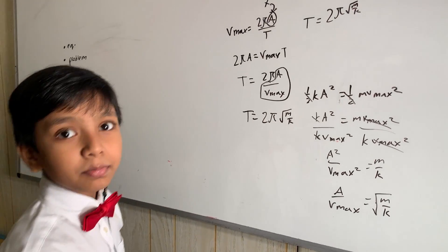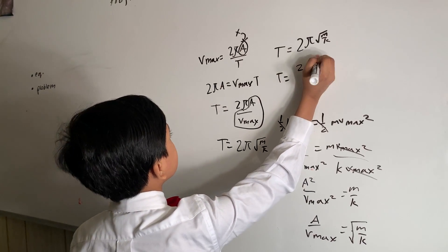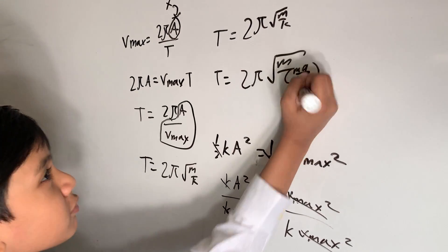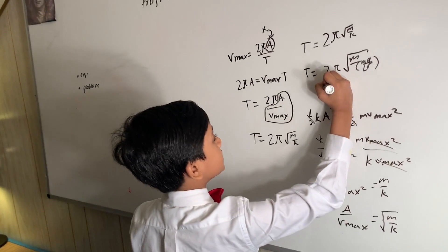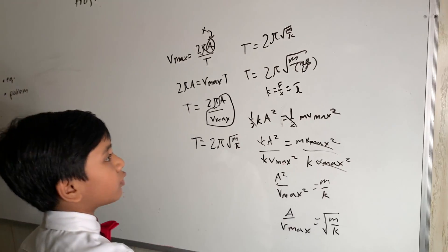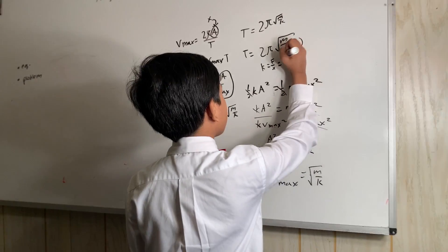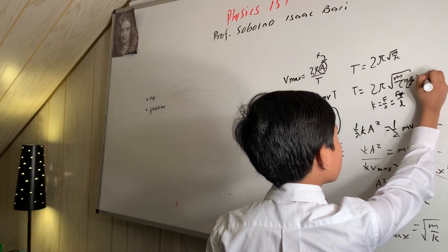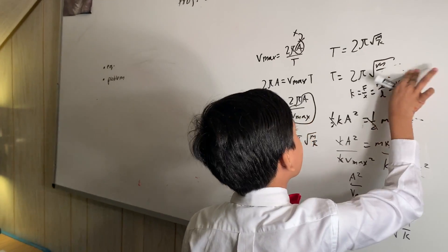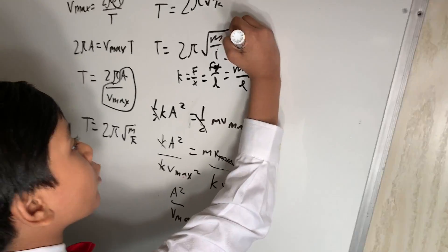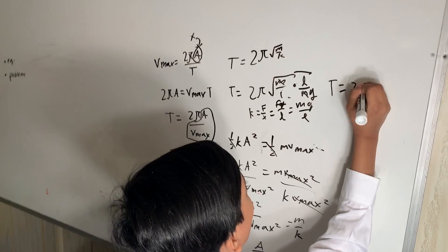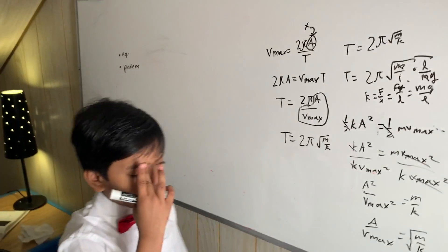Now let's plug in the pendulum equation for this. T equals 2π times the square root of m over (mg over l). How is k equal to mg over l? I'll prove it: k equals F over x, where x is the length of our cord, and F is F_g, the gravitational force, for our simple pendulum. That gives us mg over l. Doing the math, m over 1 times l over mg — the m's cancel — leaving us with T equals 2π times the square root of l over g.